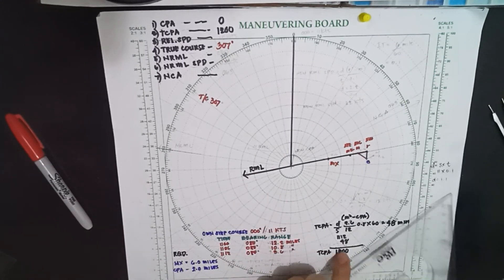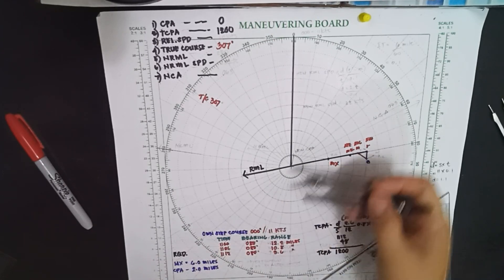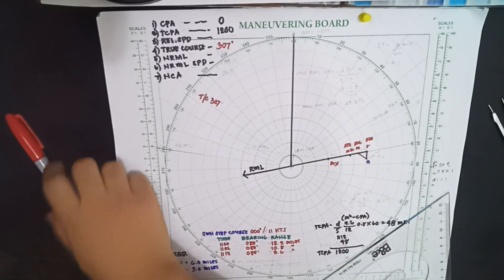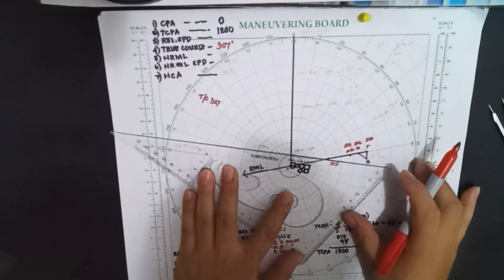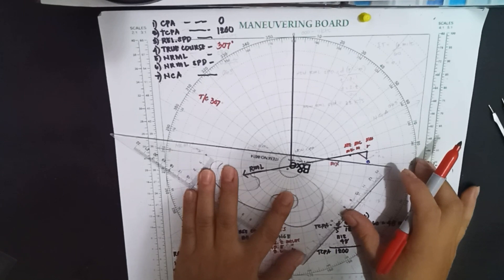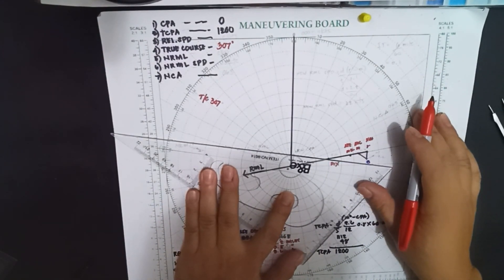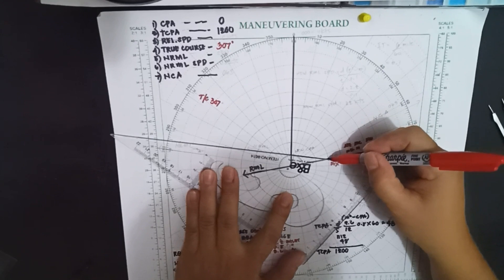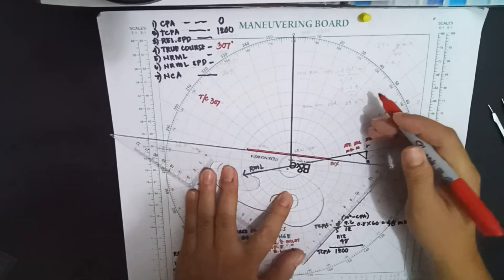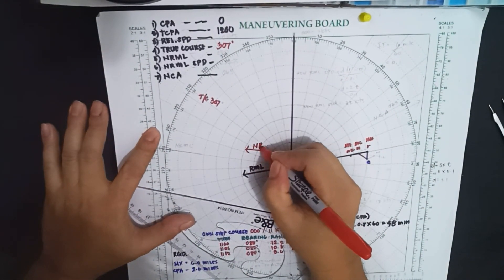We also have to measure the 2 nautical miles CPA that we required. So 2 nautical miles — from MX going to 2 nautical miles, because the vessel will pass ahead. That's why we are going to connect the MX on this side. So from MX to 2 nautical miles. This will be our new RML.